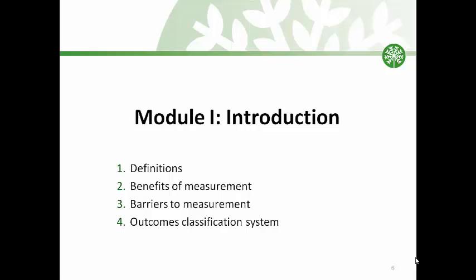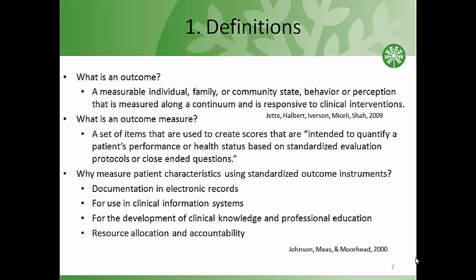We'll cover four major topics: definitions, benefits of measurement, barriers to measurement, and outcomes classification systems. So, what is an outcome, and what is an outcome measure? Outcome measures are intended to track change in a patient's status. Their psychometric properties have been studied in patient populations and reported in the peer-reviewed literature, providing clinicians with evidence to support their use in practice. The bottom line: outcomes reflect the influence of person characteristics, such as severity of impairment, life roles and cultural experience, processes of care, and external factors in the environment.